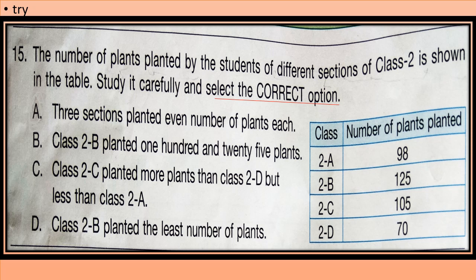Question 15. The number of plants planted by the students of different sections of Class 2 is shown in the table. Study it carefully and select the correct option. Now look at the table. Statement A: Three sections planted even number of plants each. Now see the table and choose whether 3 sections planted even number of plants each. B: Class 2B planted 125 plants. C: Class 2C planted more plants than class 2D but less than class 2A. So check whether 2C planted more than 2D and less than 2A.